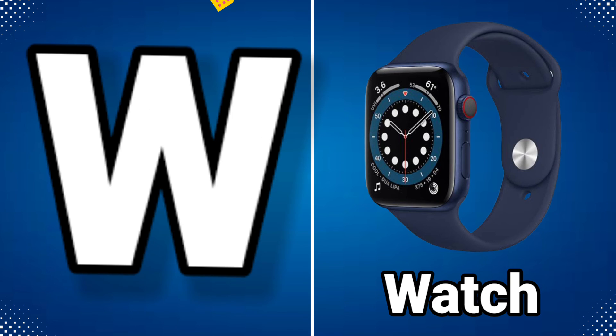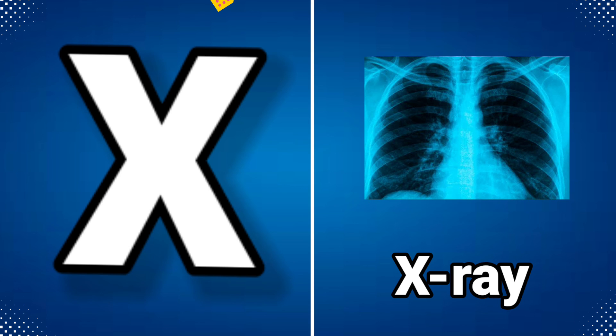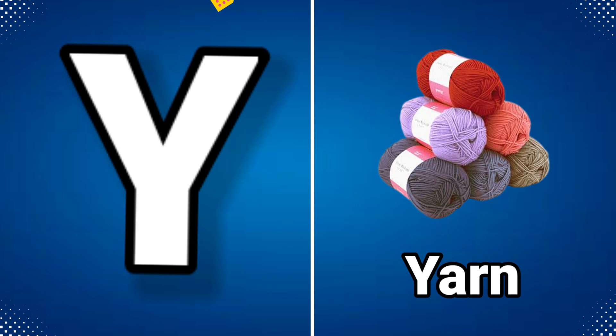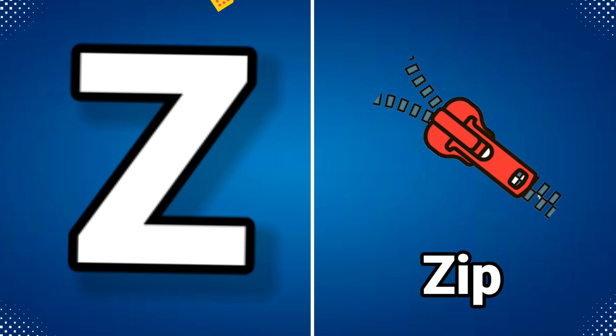V for vegetable, W for watch, X for x-ray, Y for yarn, Z for jeep.